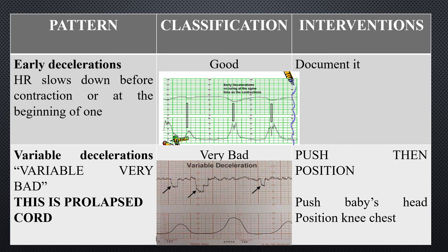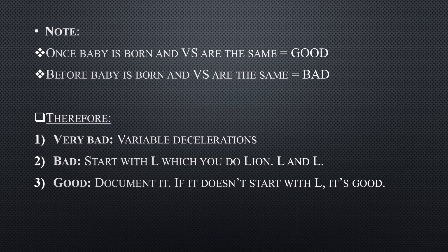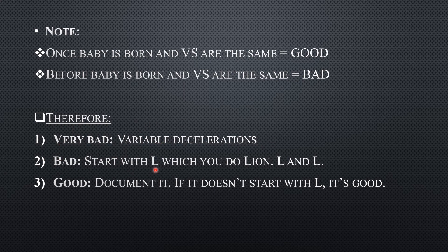To summarize fetal monitoring patterns: low fetal heart rate, low baseline variability, late decelerations, and variable decelerations are all bad — intervention follows LION PIT. High fetal heart rate, high baseline variability, and early decelerations are good — document them. Once the baby is born and vital signs are stable, that is also good.